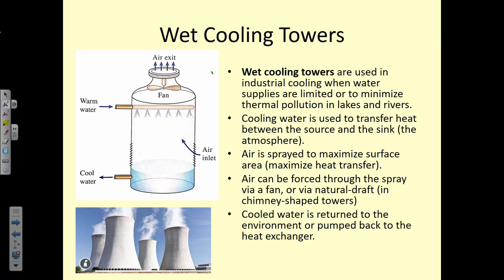Wet cooling towers are used for very large-scale industrial applications. They look like enormous chimney stacks, hundreds of feet tall — seen along rivers near chemical plants, nuclear plants, and other industrial facilities. They're used to minimize environmental impact: instead of dumping hot water directly back into a river, which causes ecological damage, cooling towers remove waste heat from the water before it's returned to the environment. Environmental regulations prohibit direct hot water discharge.